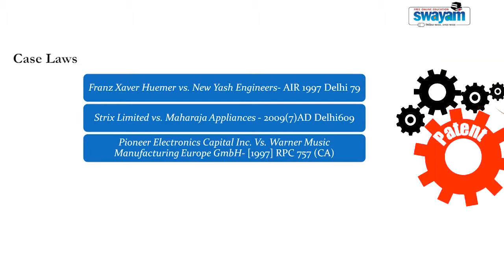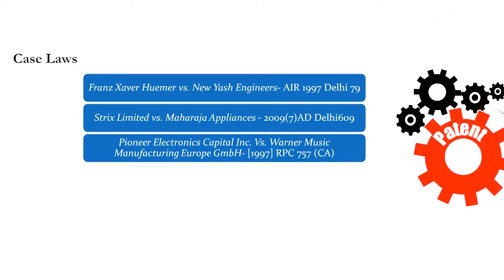For instance, if during the course of the examination of a patent application, the patentee chooses not to comply with directions issued by the controller or examiner to rectify certain objections, and yet the patent office goes on to grant the patent, it is permissible for the defendant to point to those aspects of the patentee's conduct and seek refusal of an interim injunction on the ground that the improper examination of the patent — although not a ground for revocation under section 64 — certainly gives rise to doubt regarding the grant of the patent, and therefore the court ought not to enforce it.